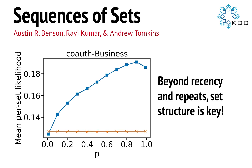Accounting for set structure is key. If we don't account for set structure, this baseline model just is terrible. But if we do account for set structure — with this parameter p that you'll have to read our paper to understand — you can see that we actually get a good performance win in prediction.